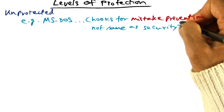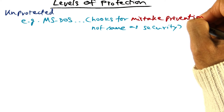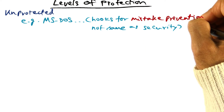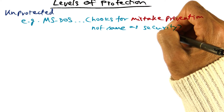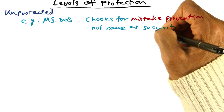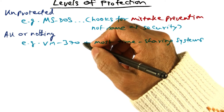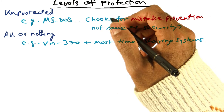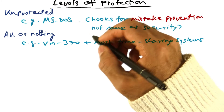MS-DOS had hooks in the system for preventing mistakes by the user, but there was no real protection. Mistake prevention is not the same as securing a system — it's important to see the distinction between the two. Now let's talk about the four levels of protection that Saltzer identifies in this classic paper.